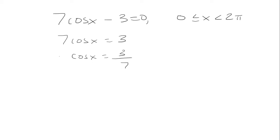Now to solve for x, I have to apply the inverse cosine to both sides. So the cosines are going to cancel. I'll be left with x equals inverse cosine of 3 over 7.